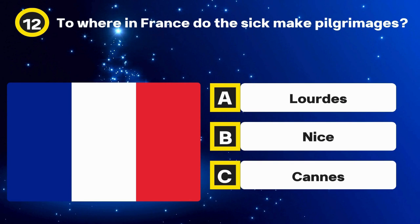Question 19. On the Mohs scale the hardest substance is diamond — what's the softest? Options: Soapstone, Talc, Gypsum. The answer: Talc.